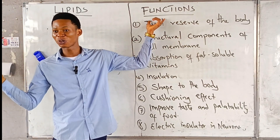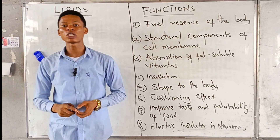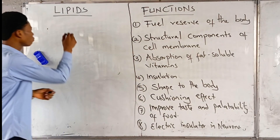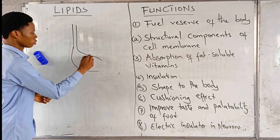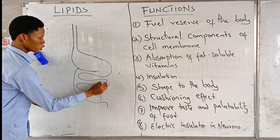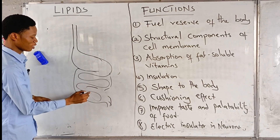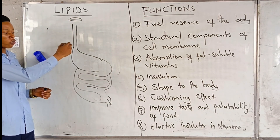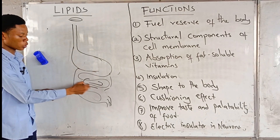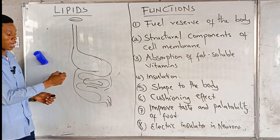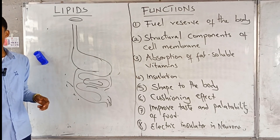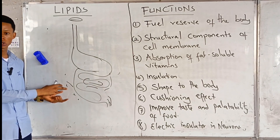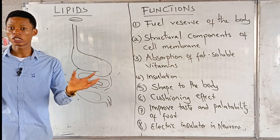This fuel reserve we are talking about is not petrol from your filling station. The main source of energy for the body among the classes of food is carbohydrate. When you take in food, it passes through your esophagus to your stomach, and digestion ends in the small intestine. The nutrients are absorbed into the bloodstream. The end product of carbohydrate digestion — monosaccharides like glucose — is absorbed into the blood, and that glucose can be broken down to release energy in the form of ATP.